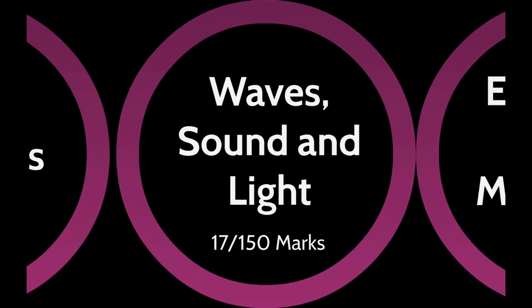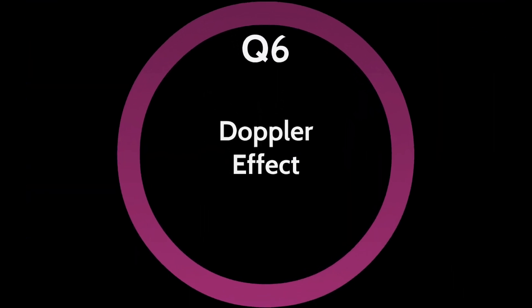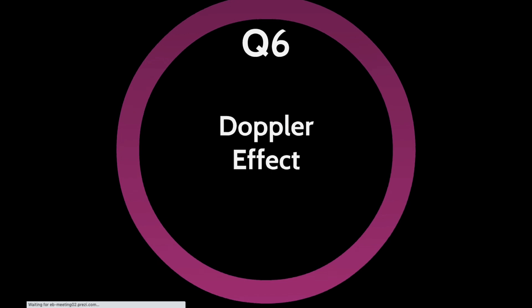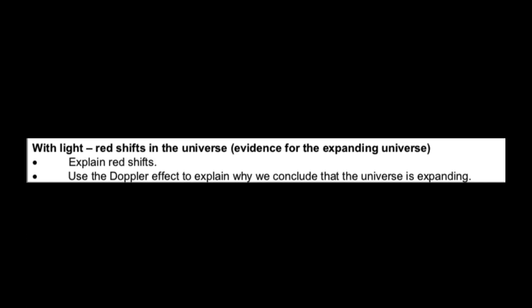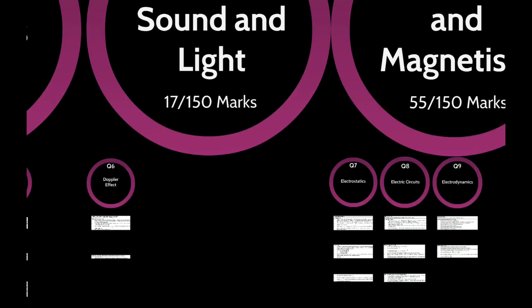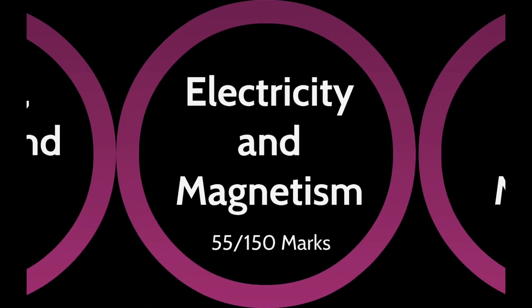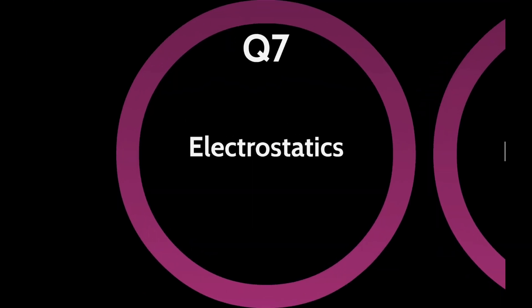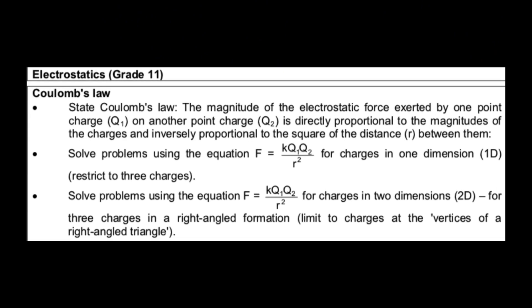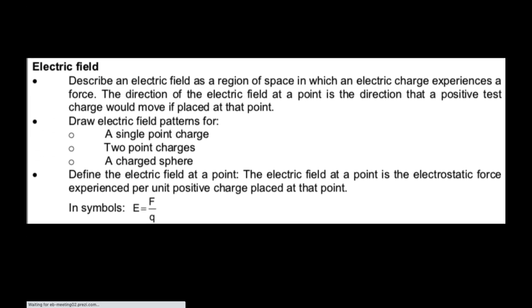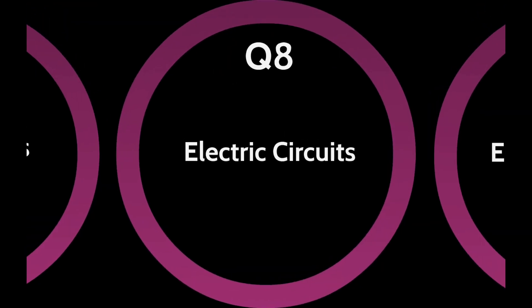The second major section is wave, sound and light, making up 17 of the 150 marks, which is Question 6 on the Doppler effect. The third major section is electricity and magnetism, making up 55 of the 150 marks — Question 7 on electrostatics and Question 8 on electric circuits.